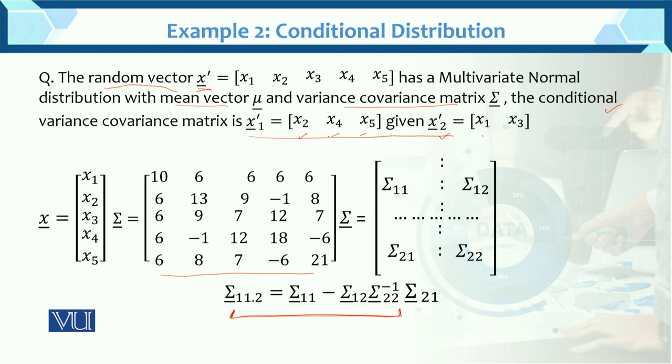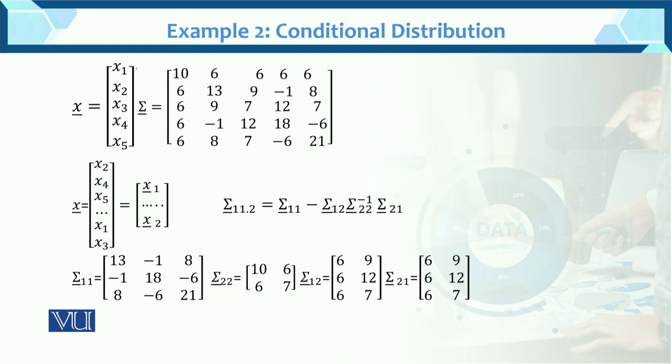In x1, what do we have? x2, x4, x5. And the partition is x1, x3. x2, x4, x5—this becomes x1. And the remaining x1, x3 becomes x2. The partition is done in this way.